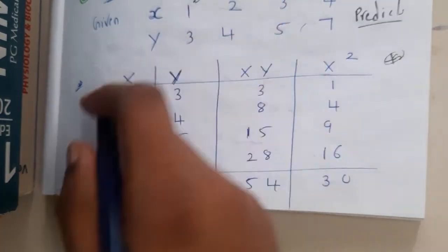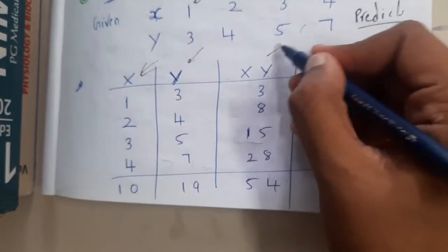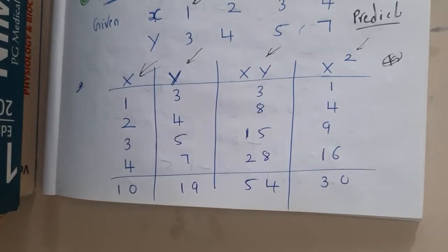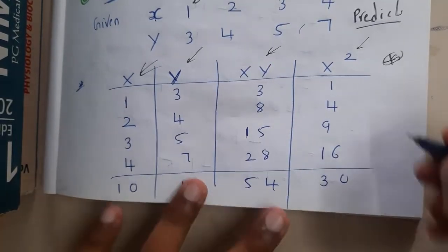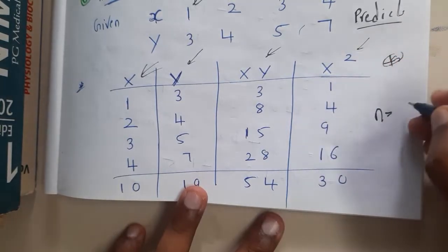The first thing you need to do is draw a table. You write x and y and calculate x into y and x square. You will understand why I am saying only these things - because these things are enough to solve the problem. We will be using a notation n, that is nothing but the number of entries. We are having a total of four entries.